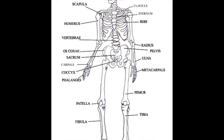To remember the names of skeletal system parts, always go from top to bottom. To remember the names of the skull parts, remember the initials C and M, which stand for cranium and mandible.